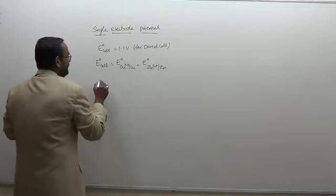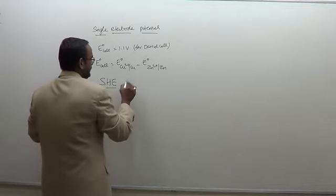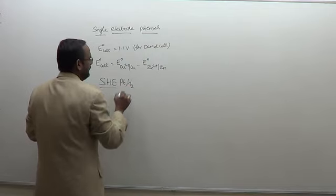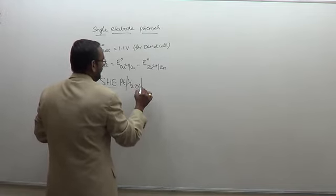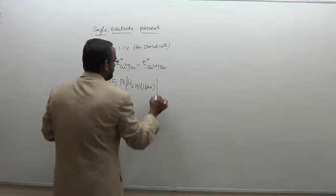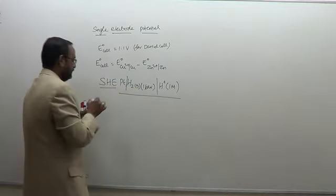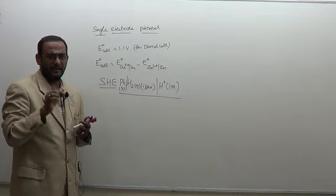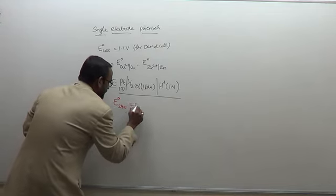To find single electrode potential, we use the standard hydrogen electrode, abbreviated SHE. The standard hydrogen electrode is hydrogen gas adsorbed on platinum, with the hydrogen gas at a pressure of 1 bar. The concentration of H⁺ ion in the solution is 1 molar. The E° value of the standard hydrogen electrode is considered to be zero volt.